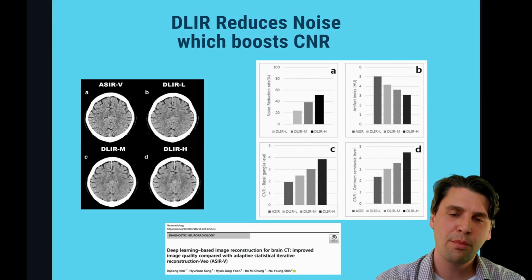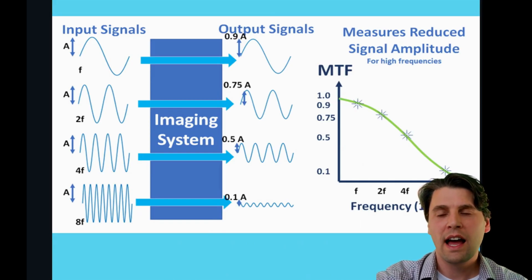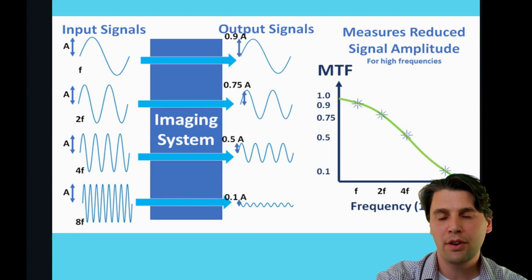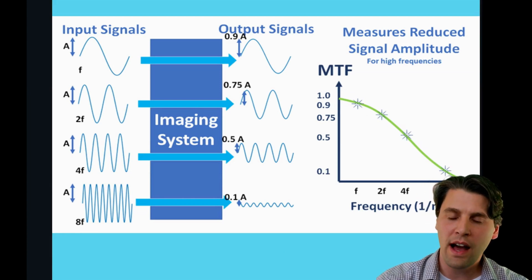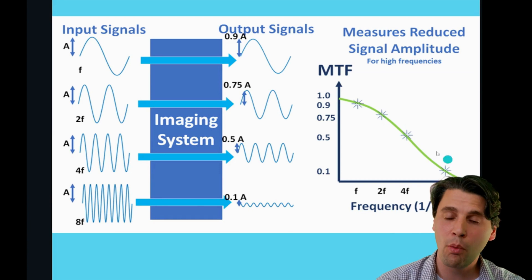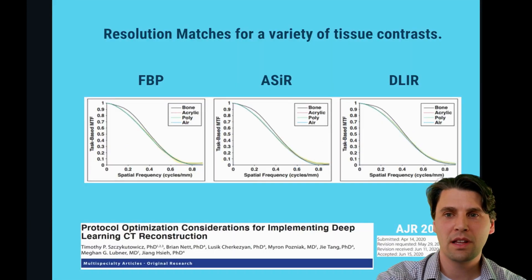The clinical modulation transfer function (MTF) looks at how different frequencies will propagate through the imaging system. In general, the higher frequencies — values that change more quickly — will be attenuated more as they go through the system. So your MTF will typically look something like this, showing that attenuation as a function of spatial frequency.